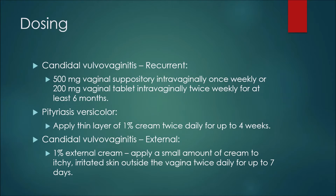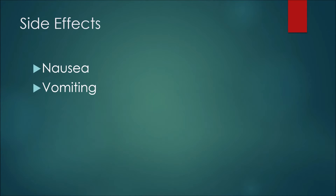For some examples of dosing with Clotrimazole: in the treatment of recurrent candidal vulvovaginitis, you may see 500 milligrams of a vaginal suppository inserted intravaginally once weekly, or 200 milligrams of the vaginal tablet intravaginally twice weekly for at least six months. In pityriasis versicolor, patients may apply a thin layer of the 1% cream twice daily for up to four weeks. For external candidal vulvovaginitis, patients may apply a small amount of the 1% external cream to the itchy, irritated skin outside the vagina twice daily for up to seven days.